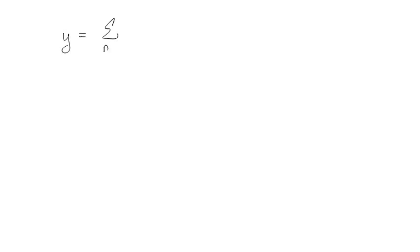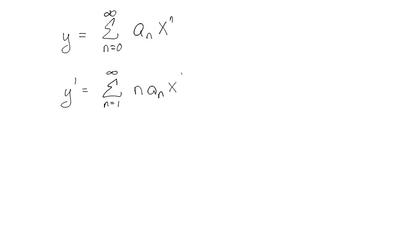So this is how you would do it. I'm going to start off with y is equal to the sum from n equals 0 to infinity of a sub n times x to the n. I'm going to differentiate it, starting at n equals 1 to infinity. And I can double differentiate, starting at n equals 2 to infinity, and that gives n times n minus 1 times a sub n times x to the n minus 2.